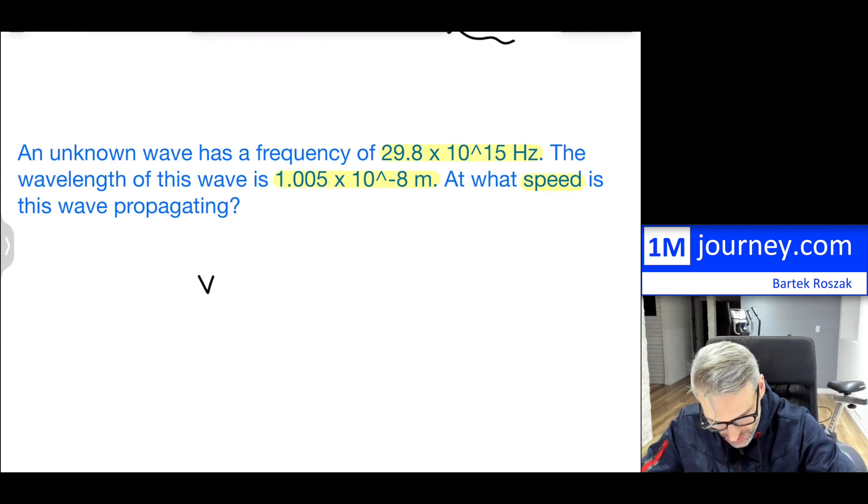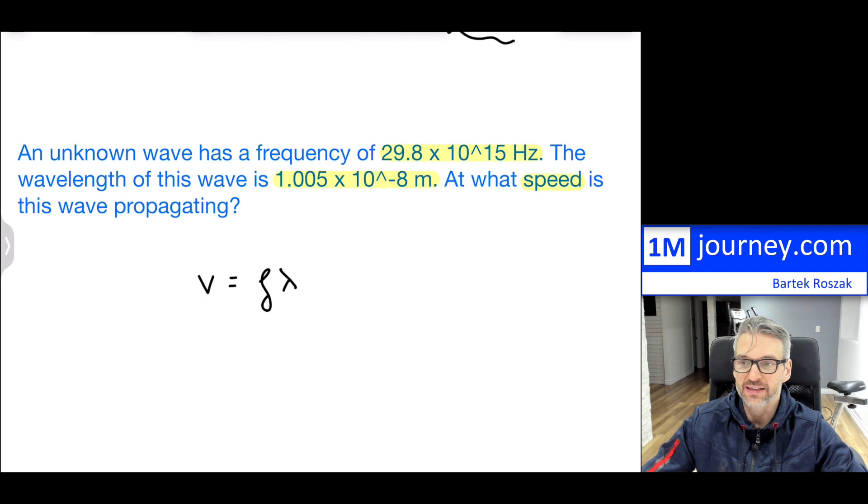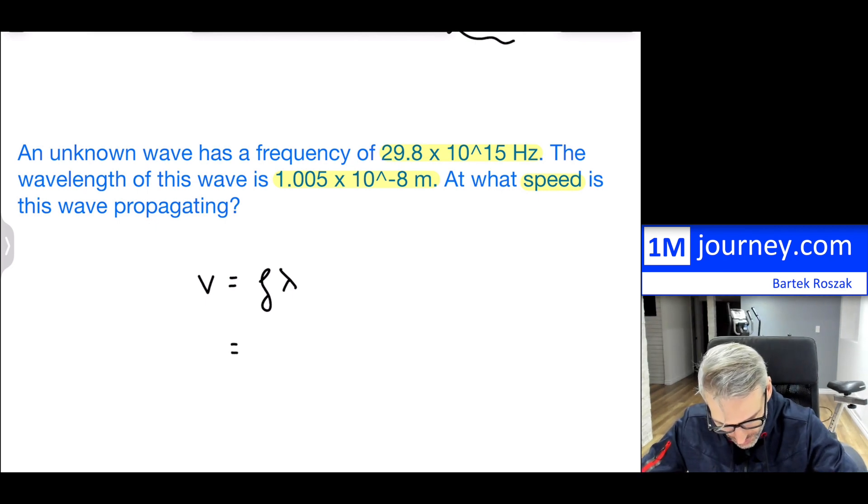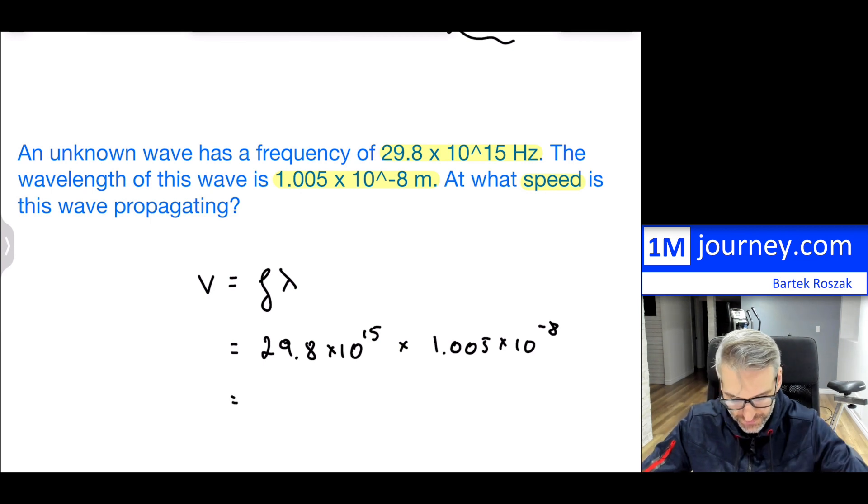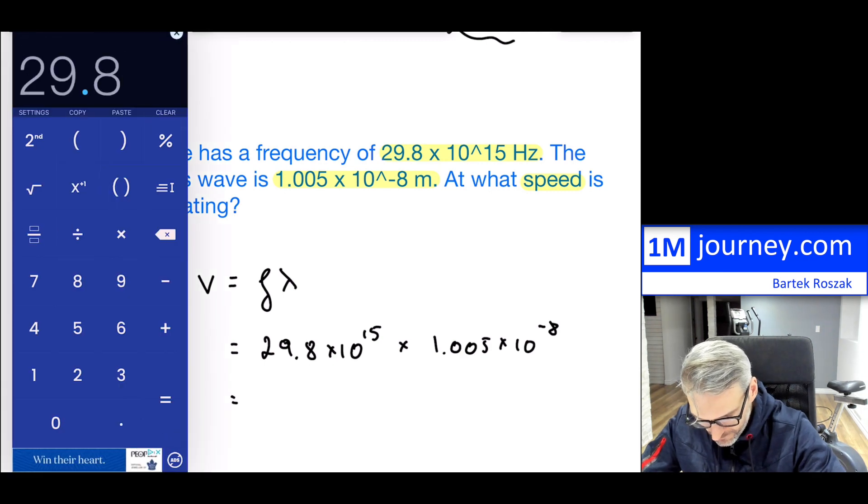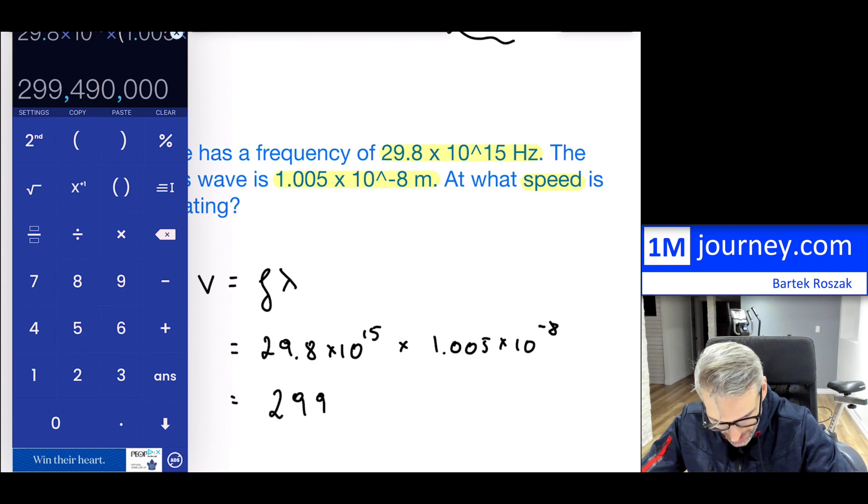I can go back in here again. So speed is equal to frequency and the wavelength. If I substitute this back in, so 29.8 times 10 to the 15 multiplied by 1.005 times 10 to the negative 8. Three significant figures is the smallest one as we multiply these through. And there we have it. As you calculate this through, we get 299490, notice 0, 0, 0, 0, and so on.